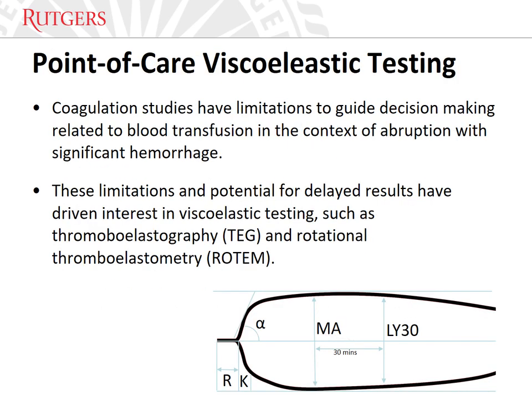Coagulation studies have limitations to guide decision-making in the context of abruption with significant hemorrhage, as these tests were developed to monitor coagulation from exogenous anticoagulants, not to ascertain the bleeding risk of obstetrical patients. These limitations, as well as the potential for delayed results, have driven interest in point-of-care testing that characterizes viscoelastic hemostatic properties, such as thromboelastography (TEG) and rotational thromboelastometry (ROTEM). These tests evaluate viscoelastic properties of clots, including the time to initiate, time to amplify, clot strength, and degree of fibrinolysis. The main advantages are rapid results and goal-directed therapy, with TEG and ROTEM results typically available in 15 to 20 minutes. These point-of-care tests may also direct resuscitation efforts to avoid overtreatment.